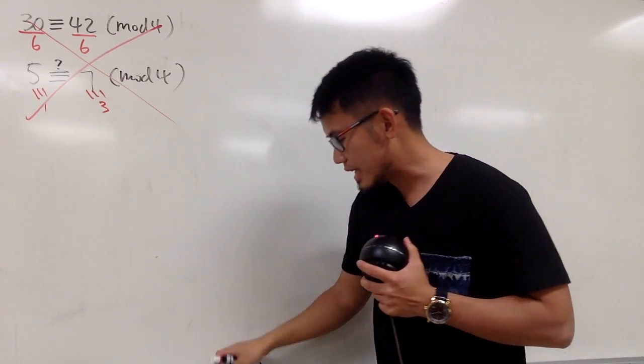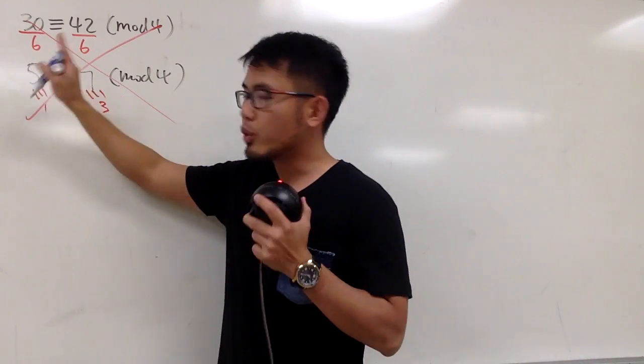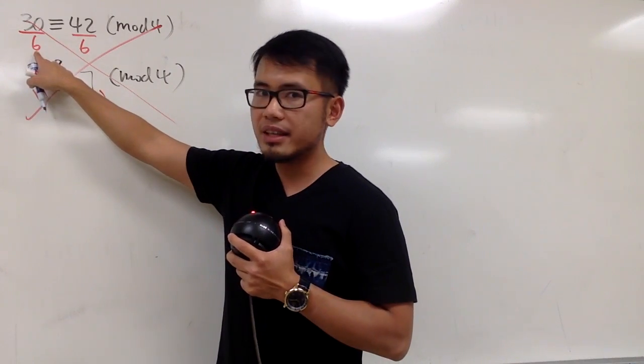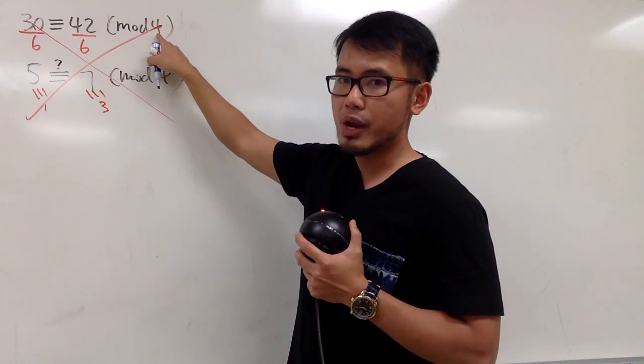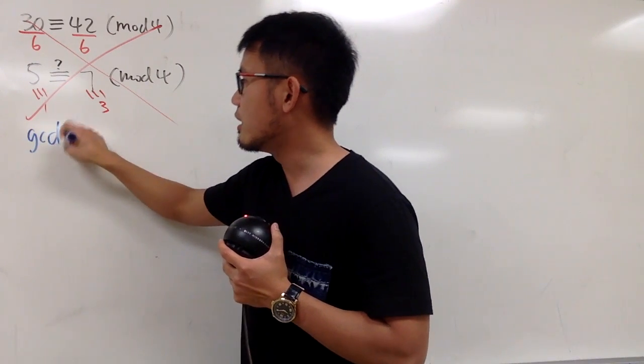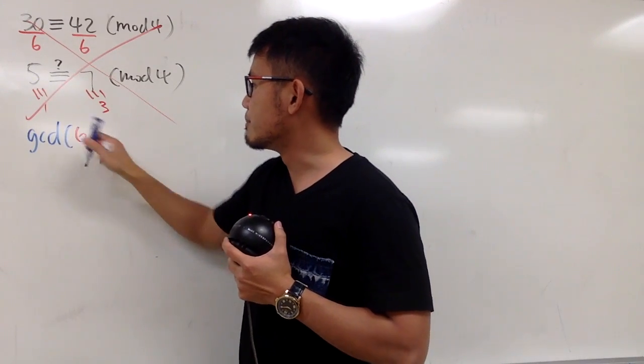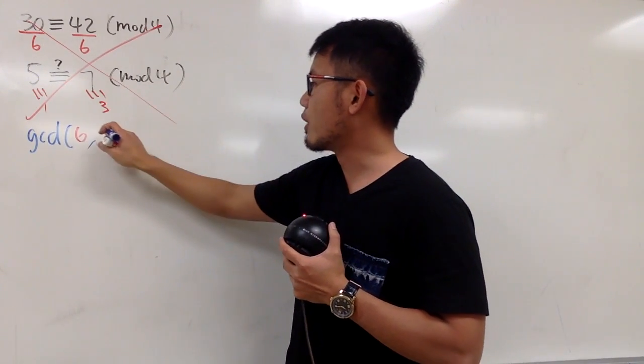And notice that the reason that this is not true is because you have to be worried about what number you are dividing and the mod number. You have to look for the greatest common divisor of this and that.